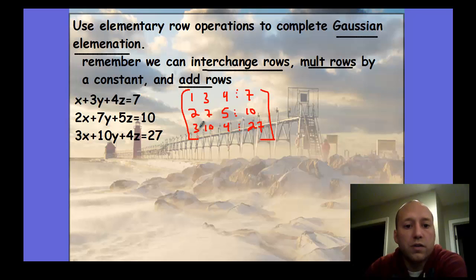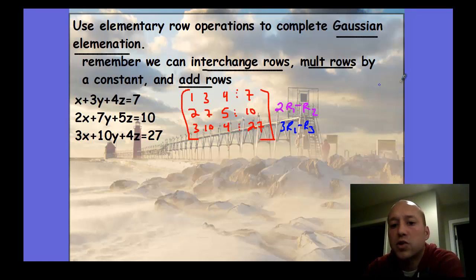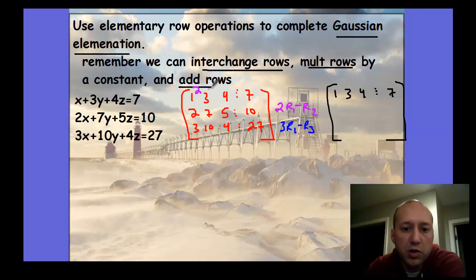Here is our augmented matrix. Now we can discuss what we're going to do here. We're going to use our notation. We're going to do 2 times row 1, then minus row 2. And we can also, at the same time, do 3 times row 1 minus row 3. Our first row stays the same. Our second one, we're multiplying the first one by 2, so this becomes 2, 6, 8, and 14. Then we subtract the second row from that. 2 minus 2 would be 0, 6 minus 7 is negative 1, 8 minus 5 is 3, and 14 minus 10 is 4.